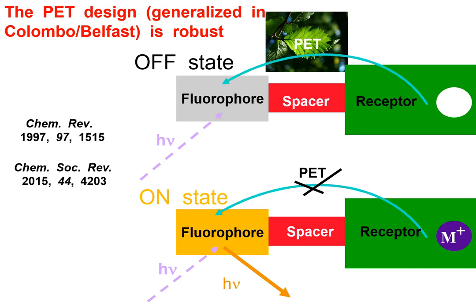When photoinduced electron transfer happens, excited states formed when photons shine on them have their energy used up to transfer this electron. Because of that, a fluorophore, which is supposed to be a fluorescent dye, cannot give light back out again because the energy was used up. That's why it's called the off state. The bottom half of the slide shows you the on state.